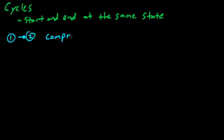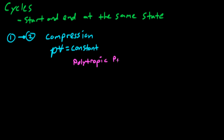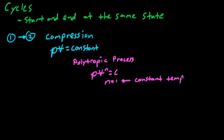The first process, going from state 1 to state 2, is compression. We're told that the compression follows a relationship in which the pressure times the volume is a constant. This is a type of polytropic process. In general, a polytropic process is PV to the n equals a constant. In this case, n equals 1, and when n equals 1, for an ideal gas, this tells us that we have a constant temperature.